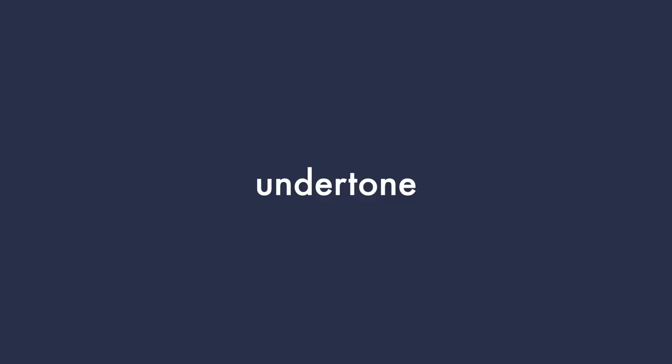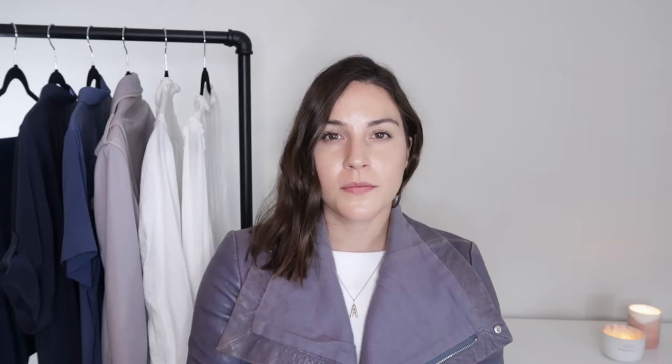There are five main aspects of color analysis that you can take advantage of when choosing colors for your wardrobe or makeup: undertone, value, intensity, contrast, and personal style. Let's start with the most important element: undertone.